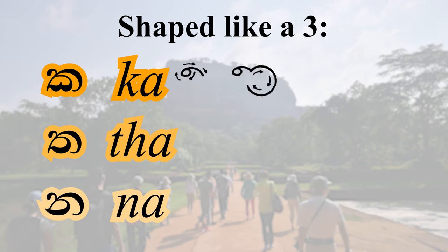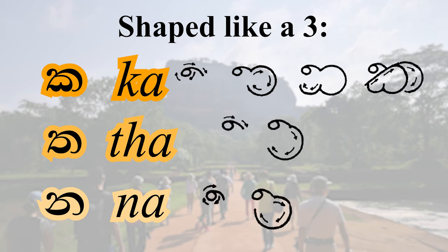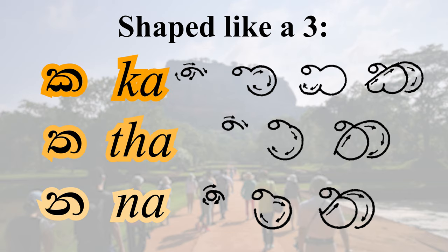After drawing the 3, draw two perfectly round circles. The difference between 'ta' and 'na' is the starting position of the final stroke. For 'ta', make sure it appears to be pointing down. For 'na', point it up, like shown.